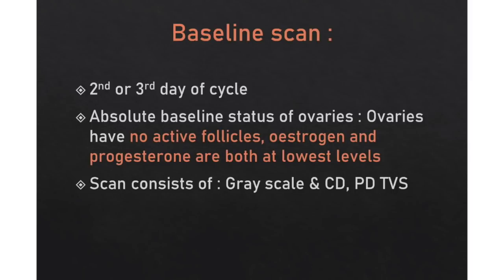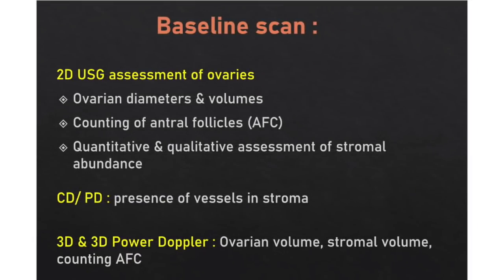In the baseline scan, follicular monitoring should begin on day 2 to 3 of the menstrual cycle when ovaries are in an absolute baseline status with no active follicles. Scanning is done with grayscale imaging, color Doppler, and power Doppler TVS. We evaluate ovarian diameters, ovarian volumes, count antral follicles, and do qualitative and quantitative assessment of stromal abundance by 2D ultrasound. Presence of vessels in the stroma is evaluated with color Doppler or power Doppler, and these parameters can also be better evaluated on 3D ultrasound.